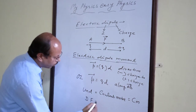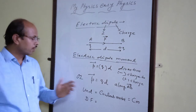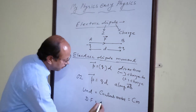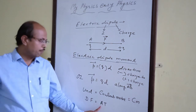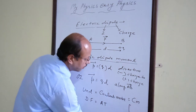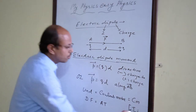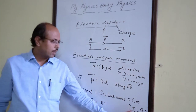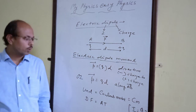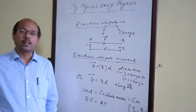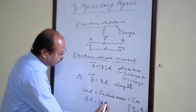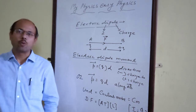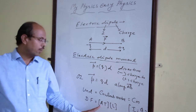We can also write the dimensional formula, because for every physical quantity it is better to write the dimensional formula. Here, charge in coulombs can be written as AT, where A stands for ampere and T for time. From class 10, we know that I equals q by T, meaning current equals charge upon time, so charge equals current into time. Current is a fundamental physical quantity, so the dimensional formula for q is AT. For distance it is L. Therefore, the dimensional formula for electric dipole moment is A¹T¹L.